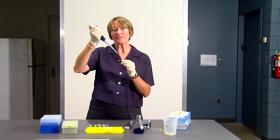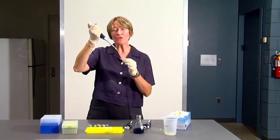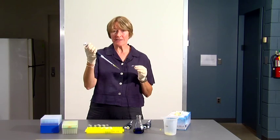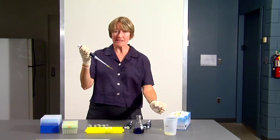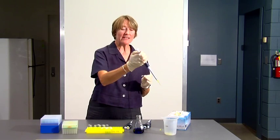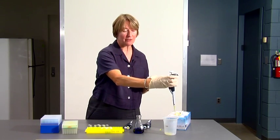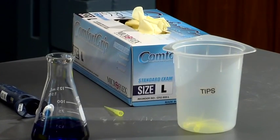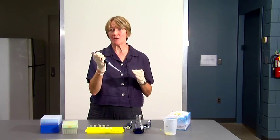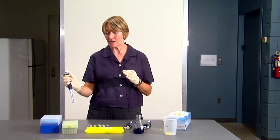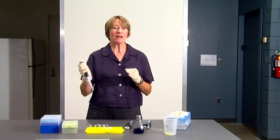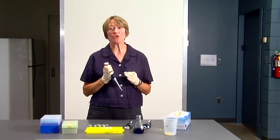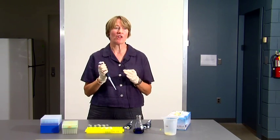When you've finished adding your solution to the tube, you will eject the tip into the waste bucket by pressing down on the tip ejector. This way you never actually have to touch the tip from the time that you take it out of the tip box until the time that you have finished your pipetting. And that way if you're working with toxic chemicals or bacteriologicals, you're not going to contaminate anything.